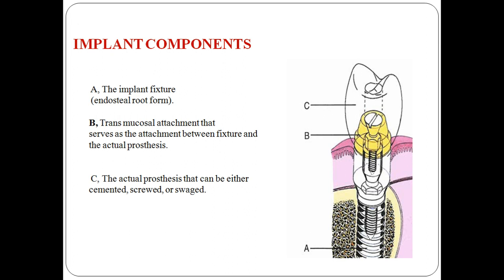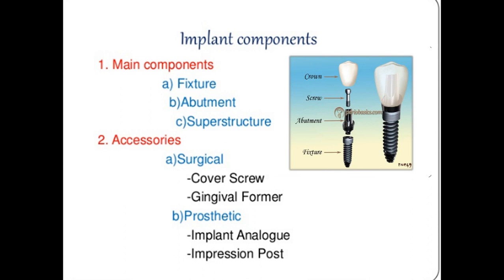Components of implants as shown in diagrams A, B, and C: A is the implant fixture; B is the transmucosal attachment that serves as the connection between the fixture and the prosthesis; C is the actual prosthesis, which can be cemented, screwed, or swaged. Main components are the fixture, abutment, and superstructure. Accessories include the surgical cover screw, gingival former, bead prosthetic, implant analog, and impression post.